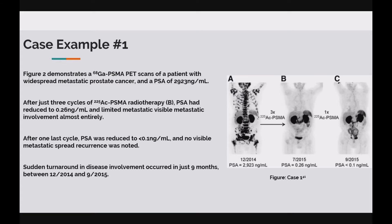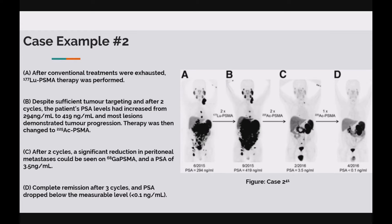In case 1, we see a gallium-PSMA PET scan of a patient with metastatic prostate cancer and a PSA of 2,923. After 3 cycles of actinium-PSMA therapy, PSA had reduced to 0.26 and visible metastatic involvement had all but vanished. One last cycle was performed and PSA was lessened to below measurable levels. This stark difference between image A and image C occurred in just 9 months and 4 total cycles of actinium-PSMA therapy. Case 2 shows a patient with advanced abdominal metastases. After 2 cycles of lutetium-PSMA therapy, the patient's PSA had further increased and visible tumour progression was noted. Therapy was changed to actinium-PSMA and after only 2 cycles, PSA was reduced to 3.5 and visible metastases had decreased significantly. After a third cycle, the patient was in complete remission. This case reinforces the promise of actinium-PSMA therapy as a treatment option for advanced stage prostate cancer.